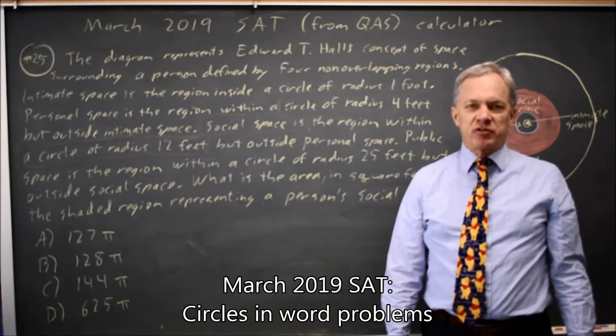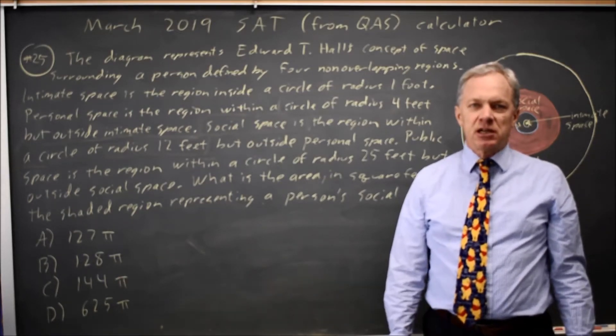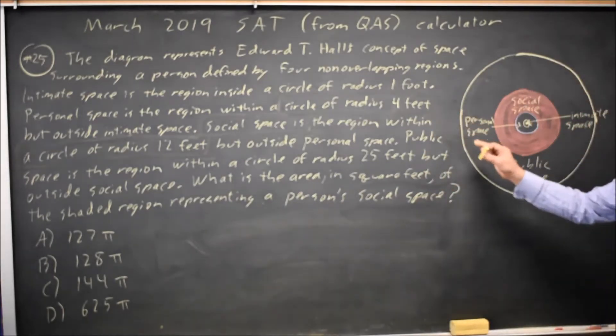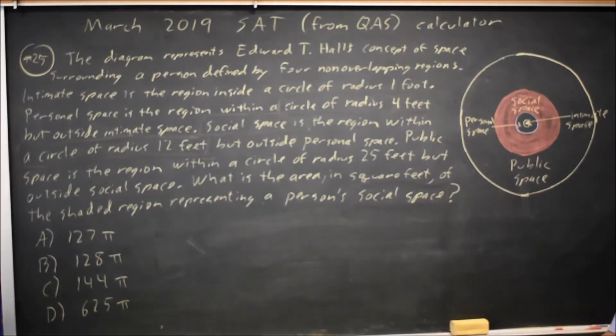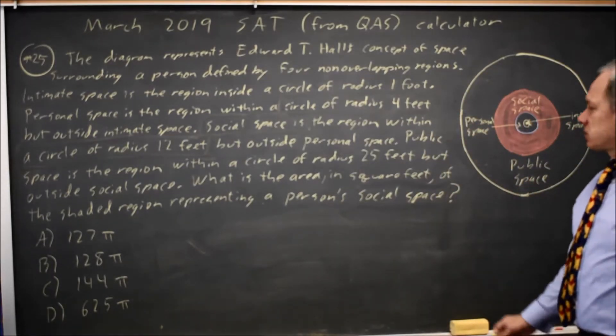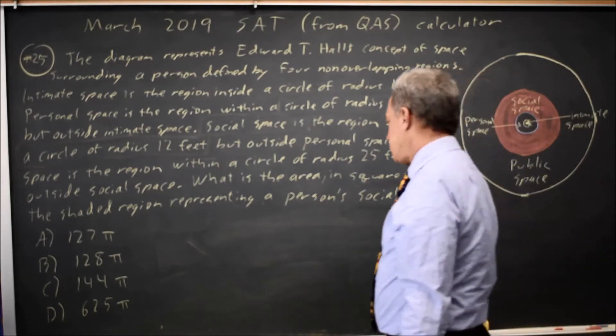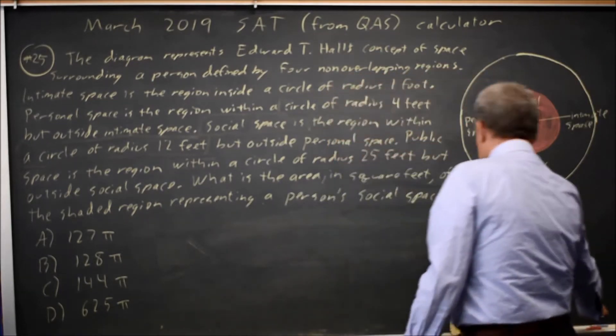This is Calculator question number 25 from the March 2019 SAT. College Board gives us Edward T. Hall's diagram of space surrounding a person and asks, what is the area in square feet of the region representing social space?